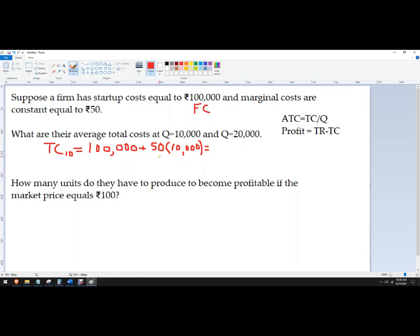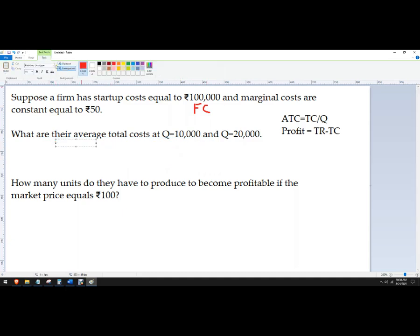And this one we can actually do in our head. That's 500,000 plus 100,000. So this first one is 600,000. And I am going to type it here.